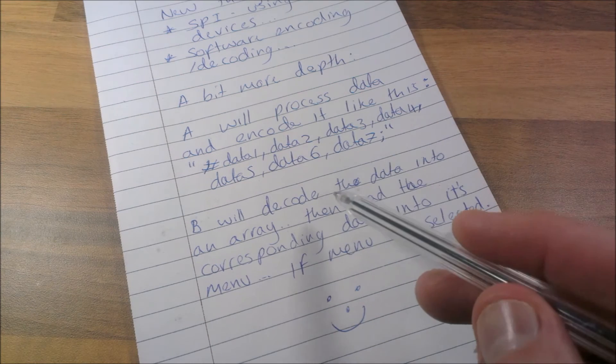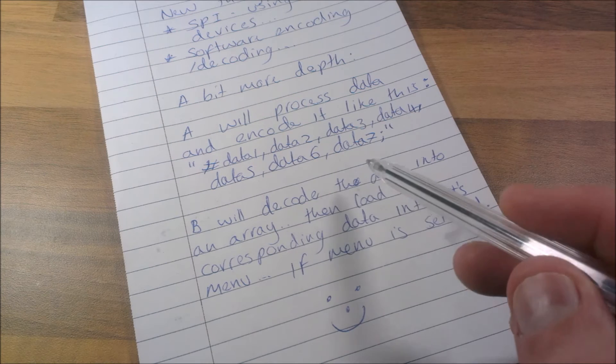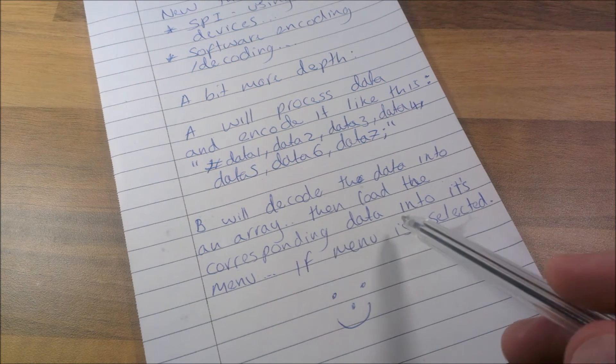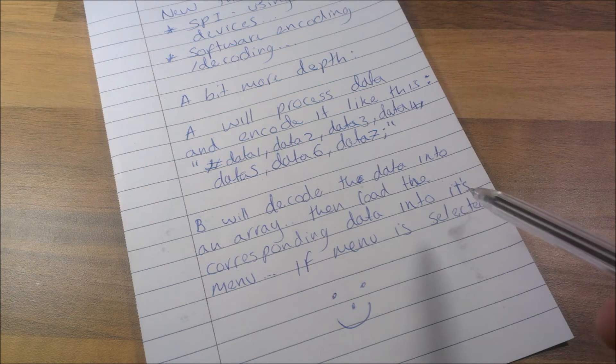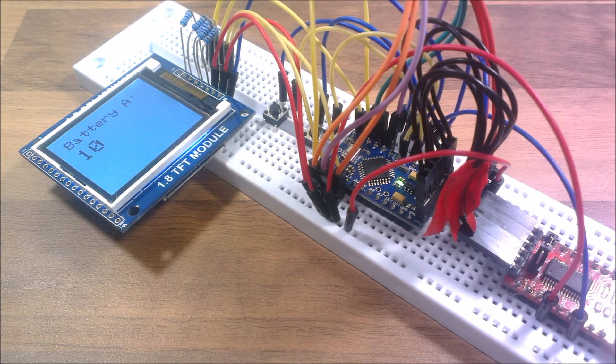It's going to do this every second. It's going to receive the data every second, split it into the various cells of the array, and then if a certain menu is selected, update the data for that menu. Okay, so this is what I'm going to show you how to do.